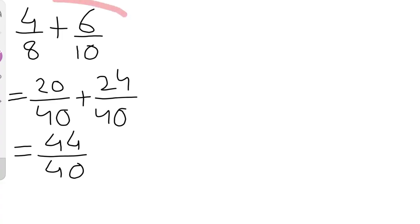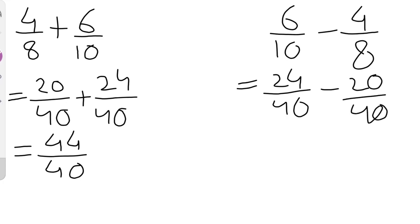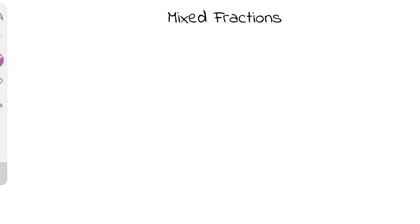Now suppose we have to do subtraction between the same fractions: 6/10 minus 4/8. We have 6/10 equals 24/40 and 4/8 equals 20/40. We perform the operation between the numerators: 24 minus 20 is 4, and the denominator remains 40, giving 4/40. In this way we can perform addition and subtraction between unlike fractions.